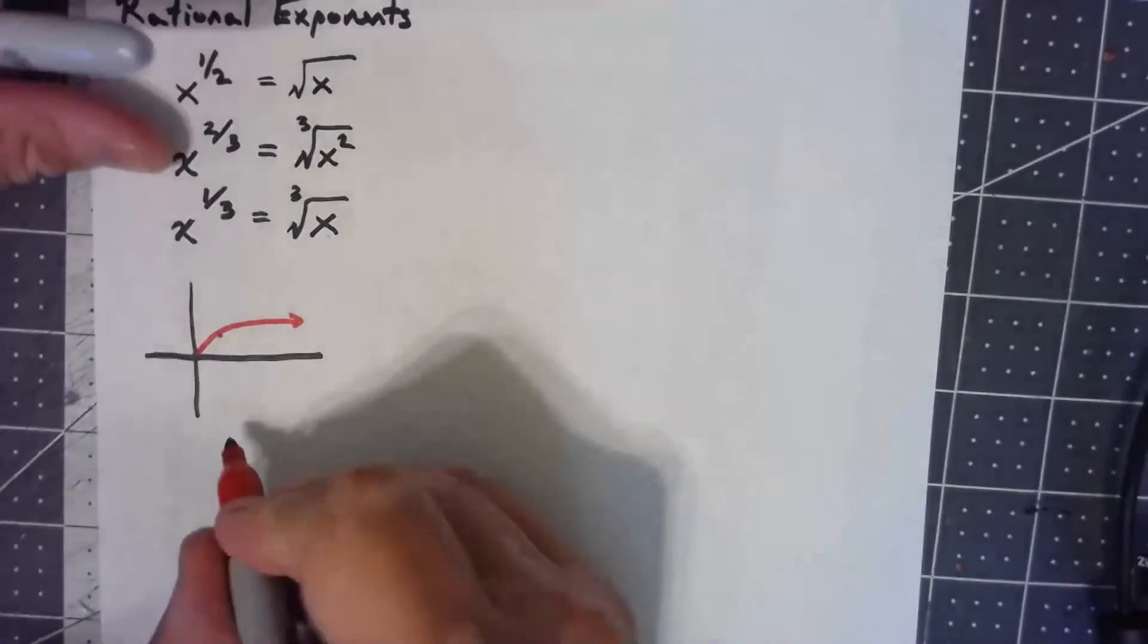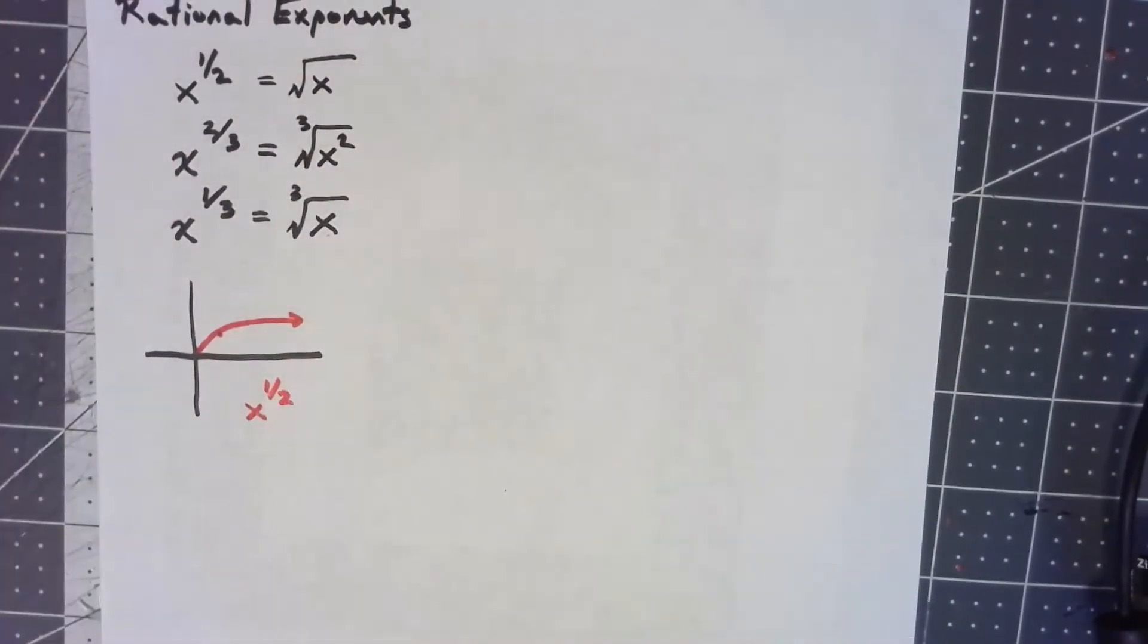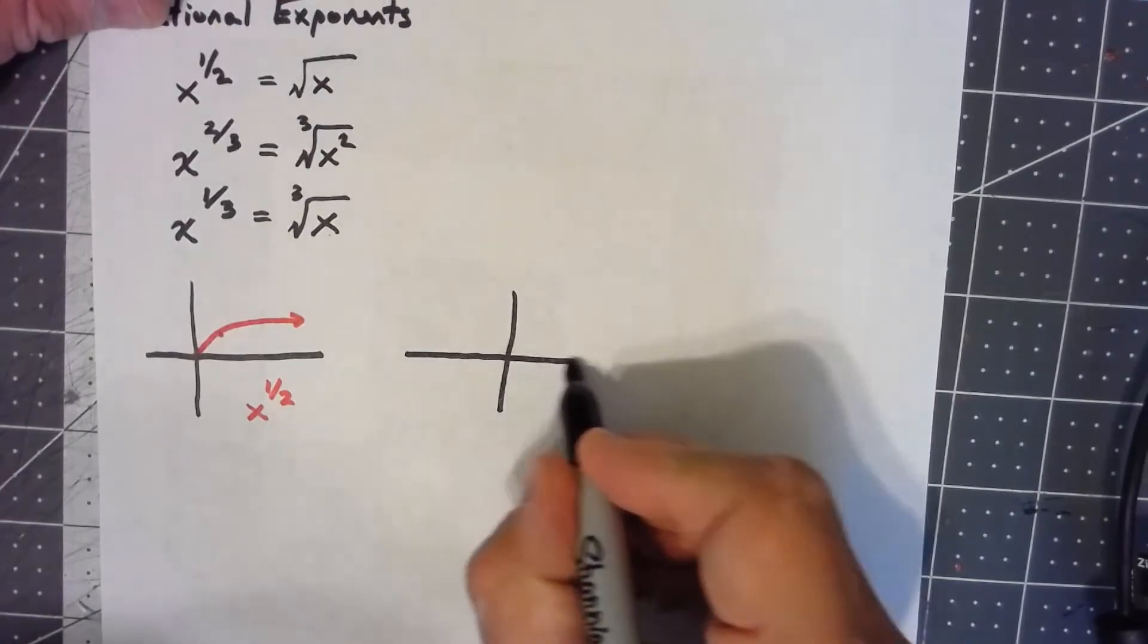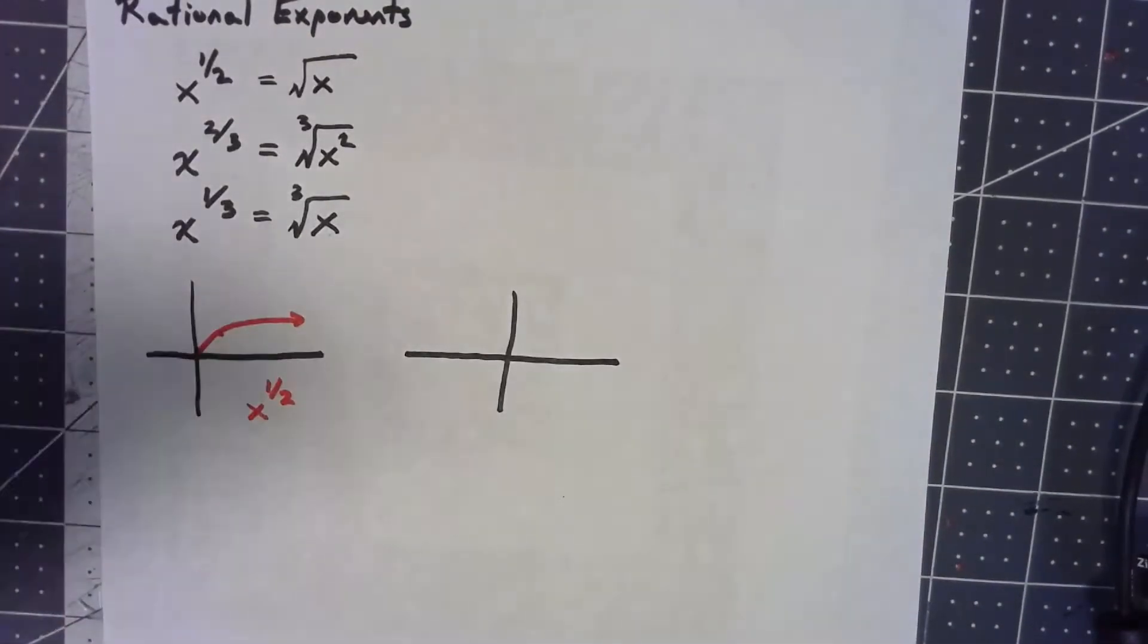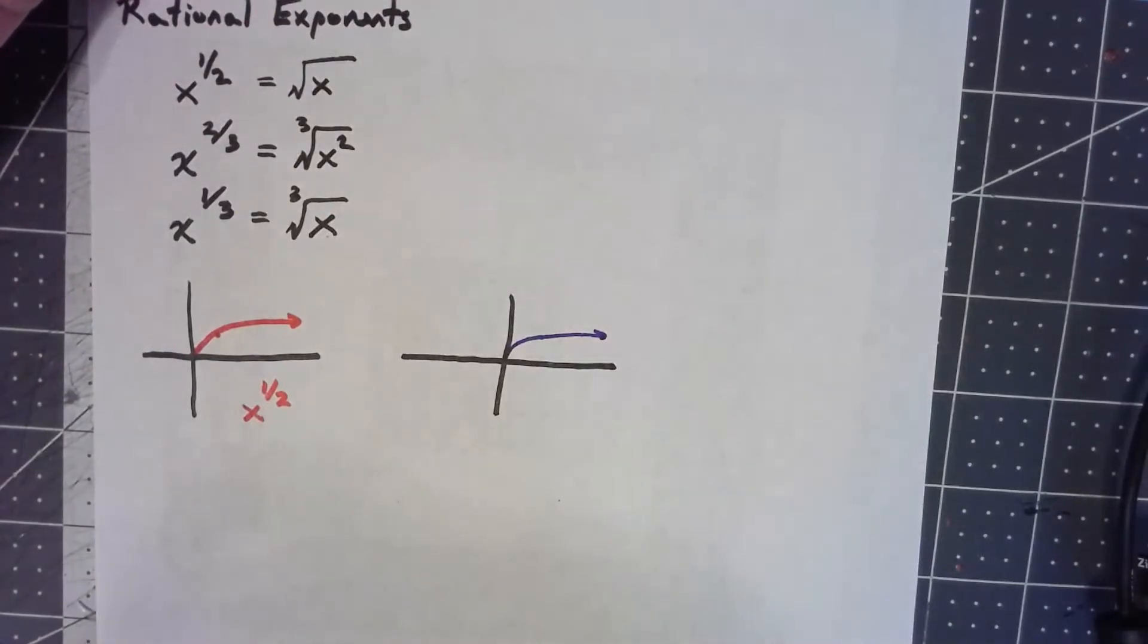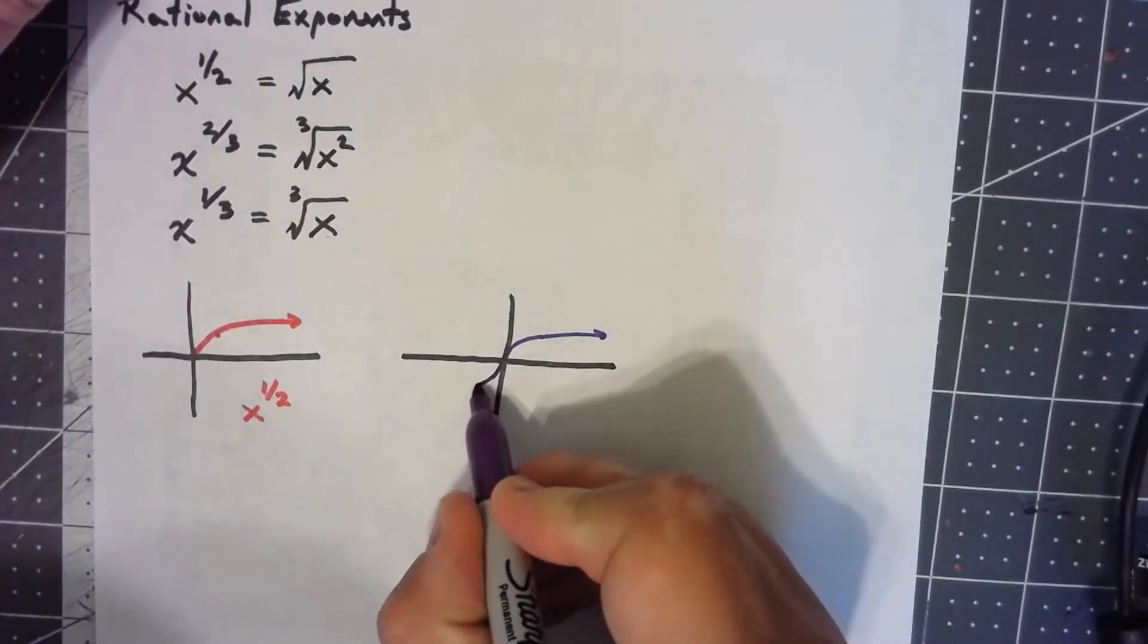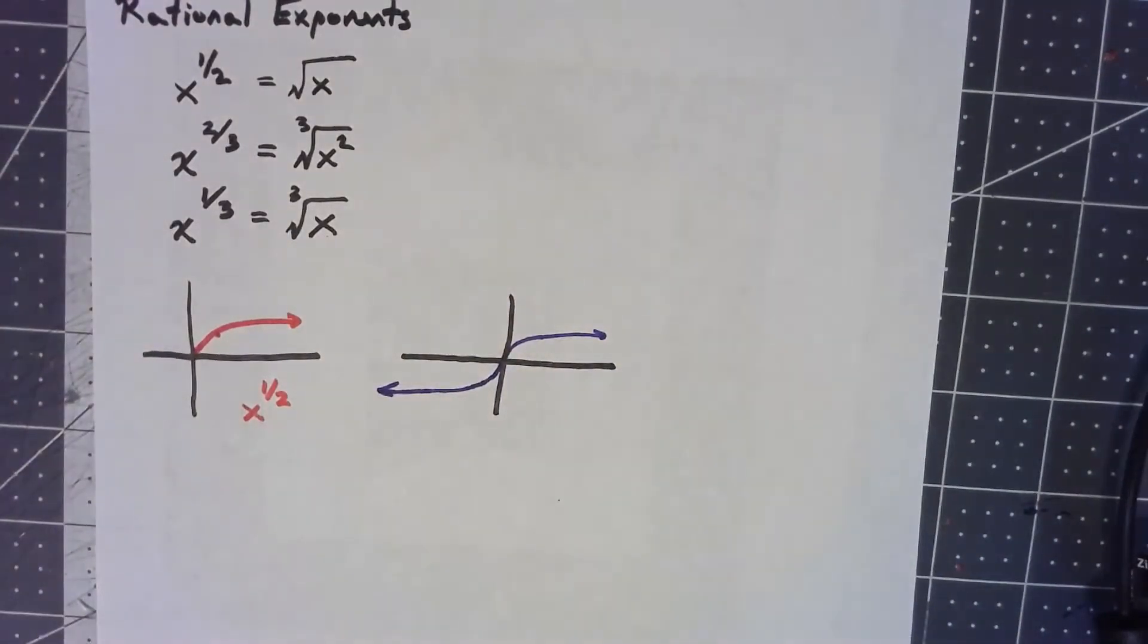And x to the 1/3, cube root of x, looks very similar for positive stuff. It's a little steeper and then flattens out a little bit more, but honestly you probably wouldn't notice that if you were just looking at a graph. But the big thing is that it's also an odd function and does the same thing over for the negative side.